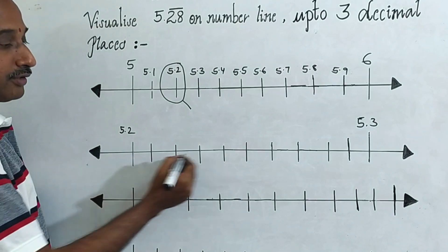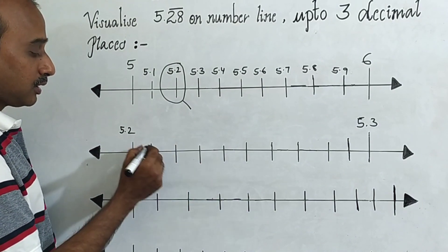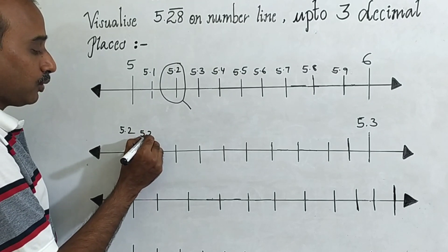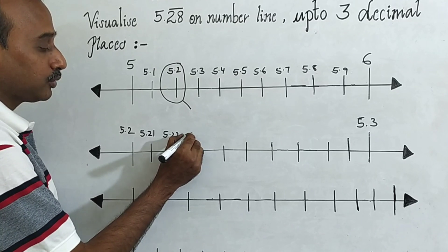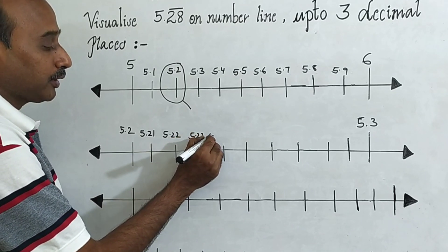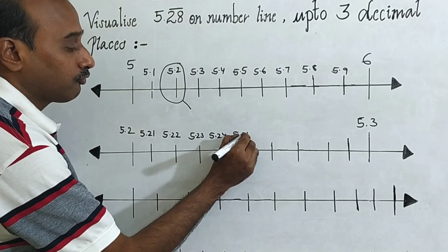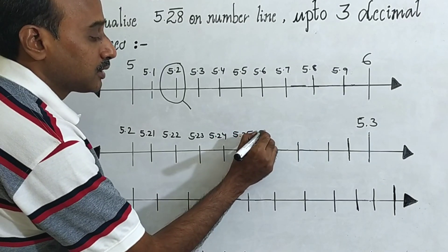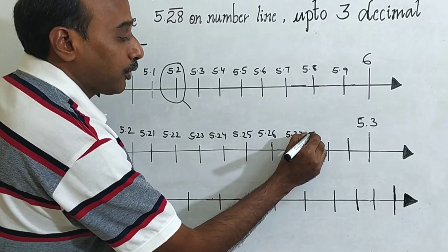Now you can divide in the similar way. You have to divide into 10 equal parts. This is 5.21, 5.22, 5.23, 5.24, 5.25, 5.26, 5.27, 5.28.